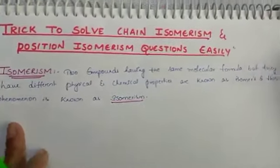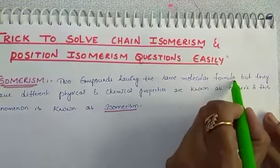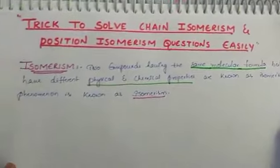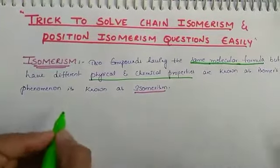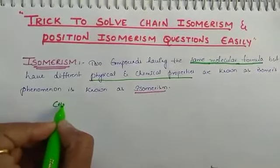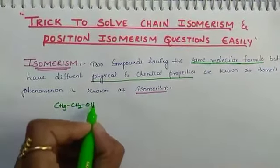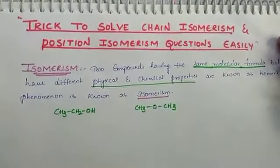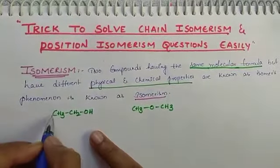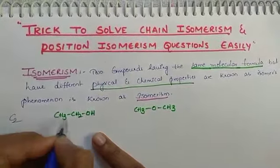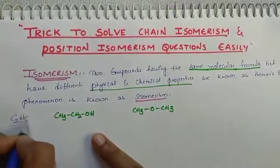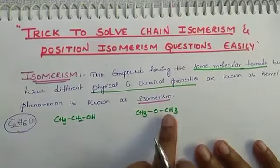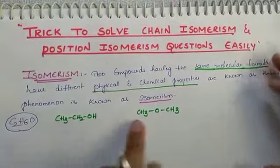To save time, I wrote here: they have the same molecular formula but different physical and chemical properties. To understand this better, I'll give you an example: CH3CH2OH and CH3OCH3. Both have the same molecular formula C2H6O — two carbons, six hydrogens, one oxygen.